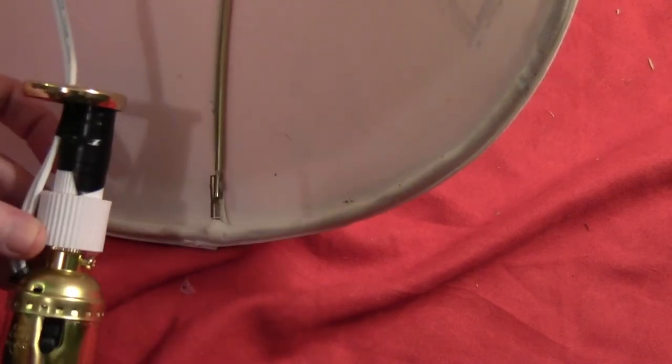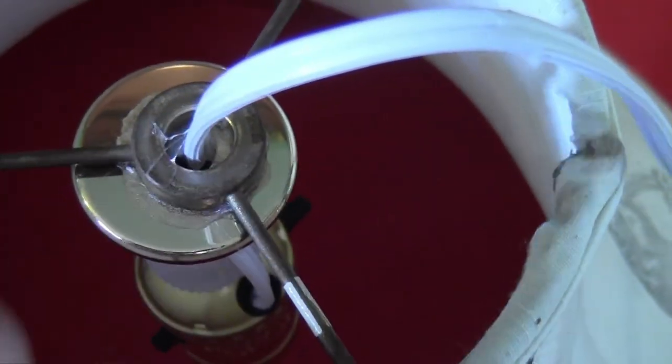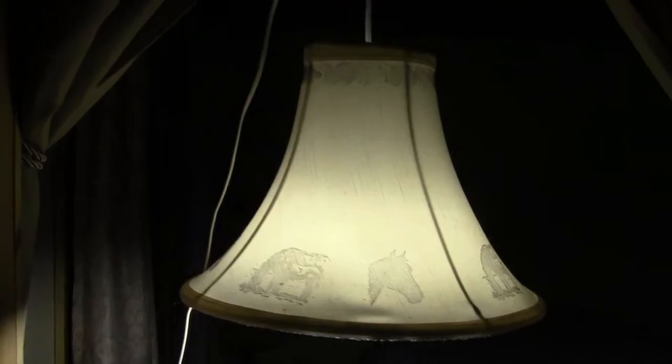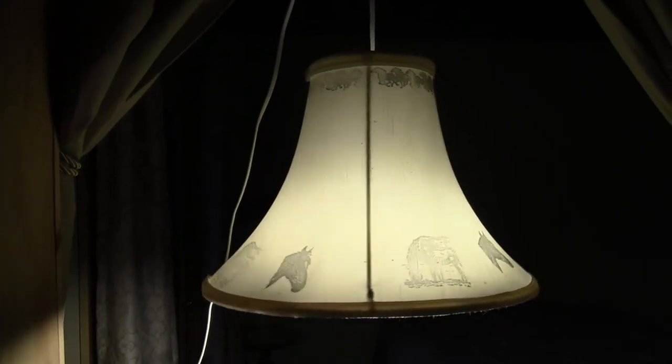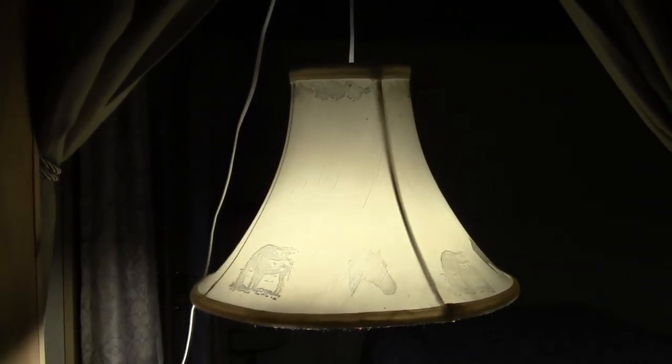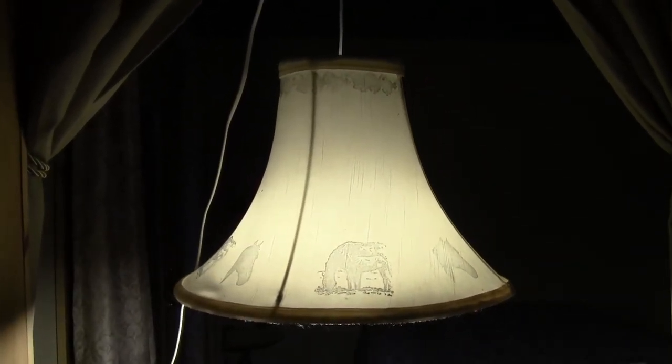And then let that dry. And once that's dry you just want to glue the metal disc to the top of the lampshade. So that when you let it hang the cord hangs perfectly straight. And the bulb is straight and not touching the side of the lamp.